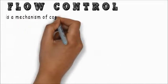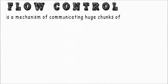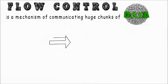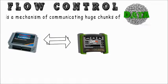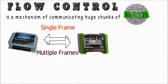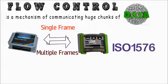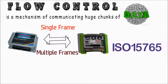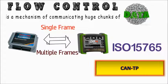Flow control is a mechanism of communicating huge chunks of data between ECU and tester by means of either a single frame or multiple frames. This mechanism is described in ISO 15765 protocol and handled in the CANTP module in Autosar architecture.